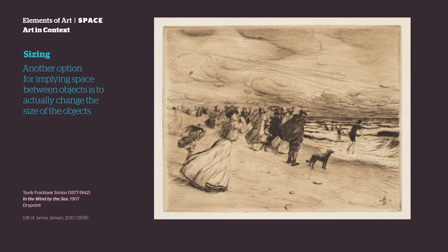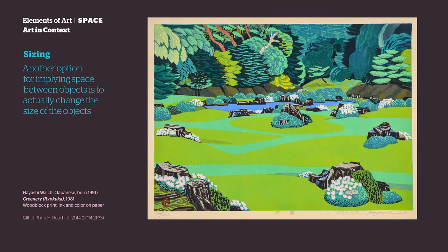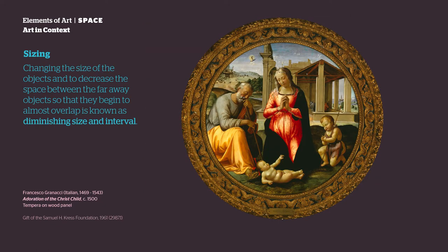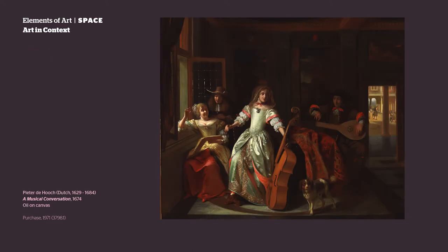Sizing. Another option for implying space between objects is to actually change the size of the objects and to decrease the space between the faraway objects so that they begin to almost overlap. This technique is known as diminishing size and interval. Notice how the larger shapes seem closer.